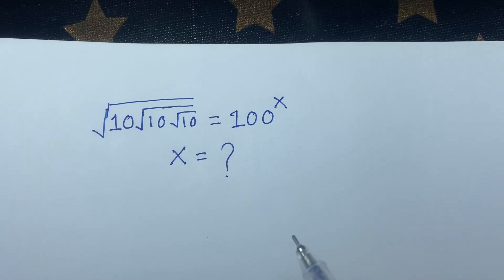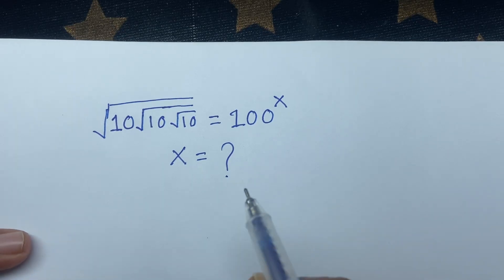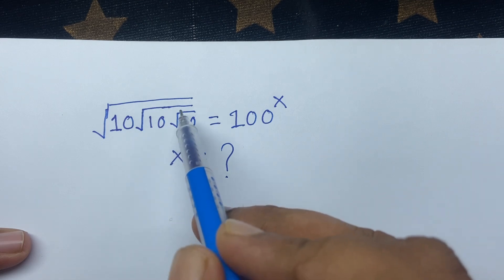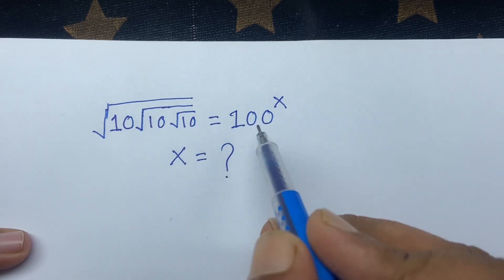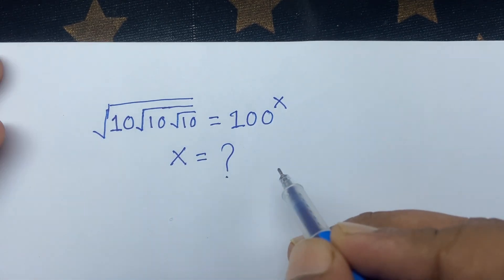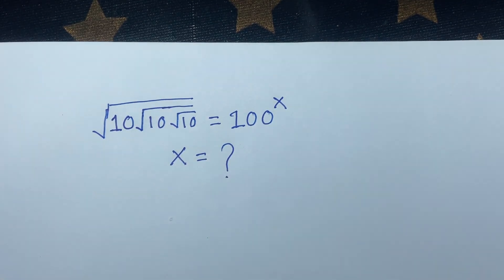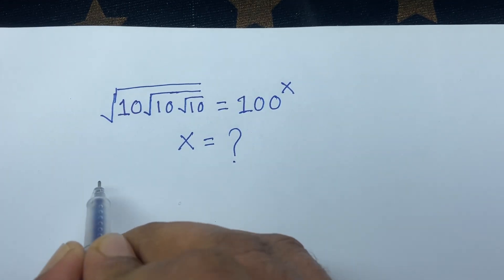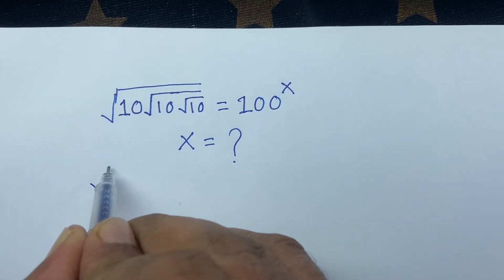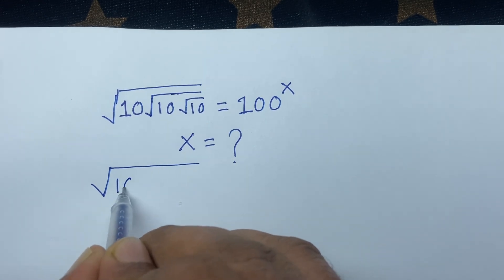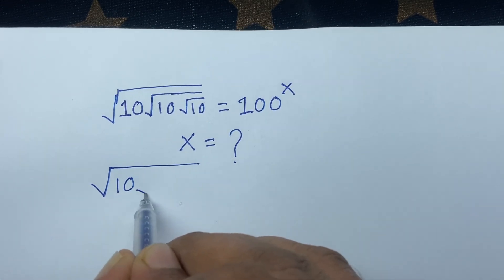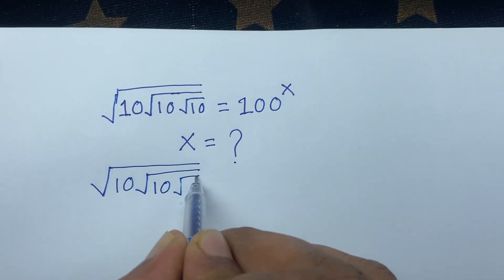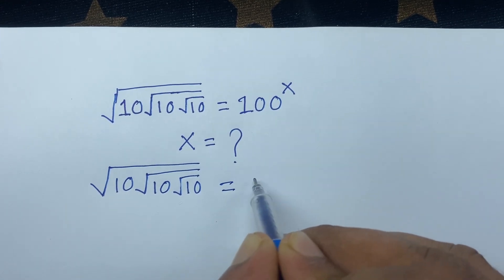In this video we have solved this interesting math question: square root of 10 times square root of 10 times square root of 10 is equal to 100 to the power x, and we find out what is the value of x in this question.